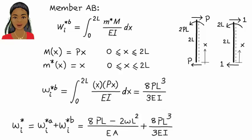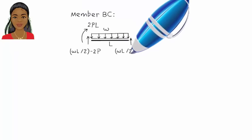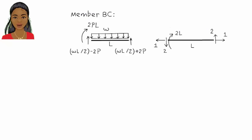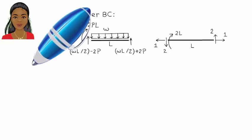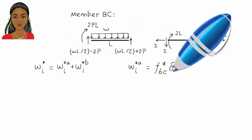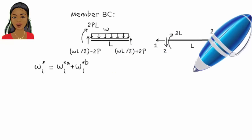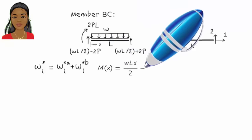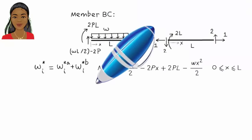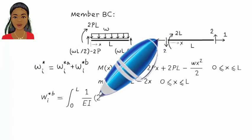Now let's repeat those steps for member BC. Here's the free body diagram for the member under the applied loads, and here is the member's free body diagram when the virtual unit load is placed at C. Internal virtual work for the member is computed. Since the member does not carry any axial force, its axial deformation is zero, so the axial term is zero. To determine the internal virtual work due to bending, we need M and M*. So the internal virtual work for BC is determined from the bending terms alone.